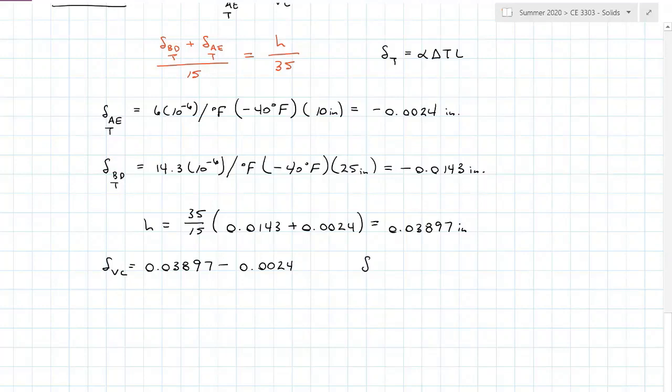My vertical deviation of point C from its untemperature changed position is 36.6 times 10 to the negative 3 inches and it does move up.